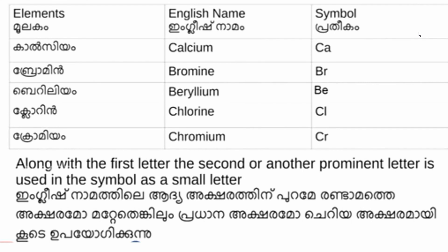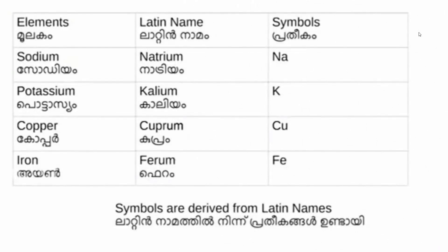Along with the first letter, a second or other prominent letter is used in the symbol as a small letter. For example, Chlorine uses C and l — giving Cl. The prominent letter from the word is selected, such as the third letter of chlorine in some cases.